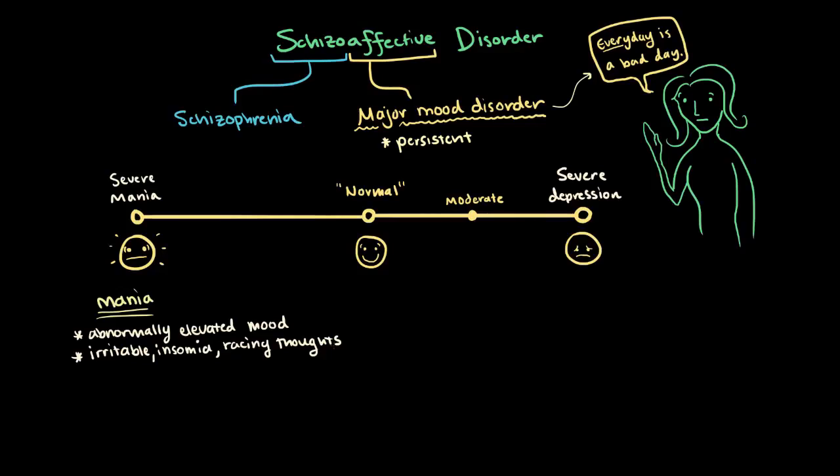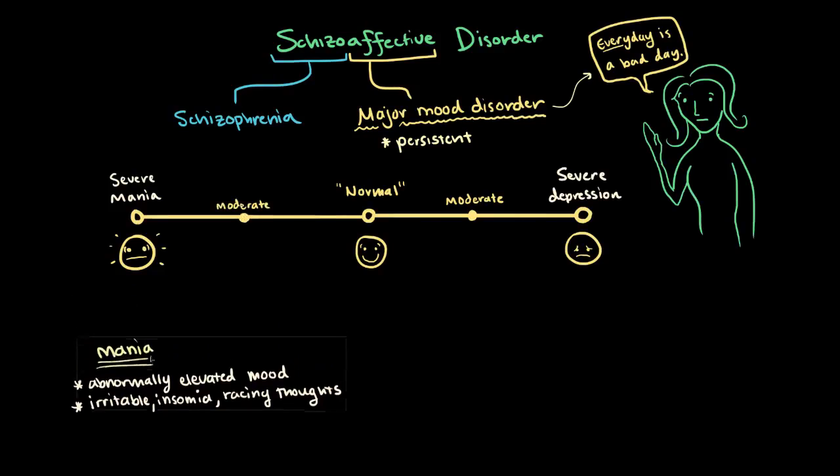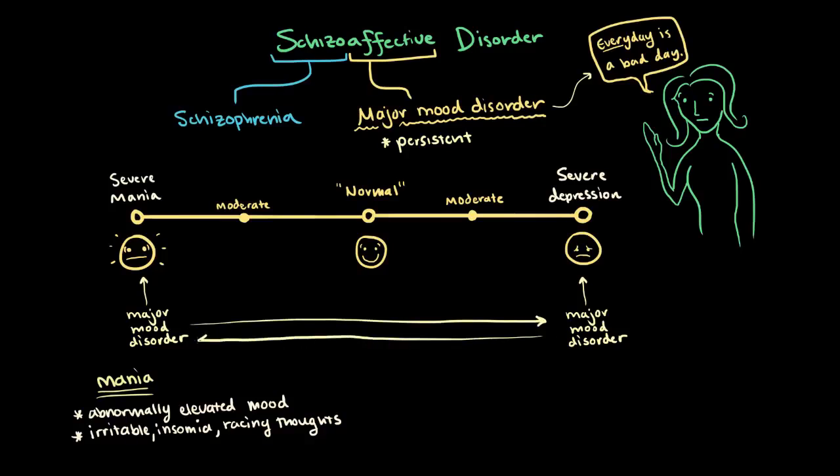Just like major depression, this would be enough such that it interferes with your daily life. You've also got varying degrees in between normal and mania. So a major mood disorder might be out here at severe depression or out here at severe mania, or you might have these huge swings in mood between depression and mania, which is sometimes called bipolar disorder.